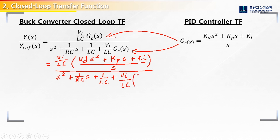And now we substitute in our PID controller equation: KD s squared plus KP s plus KI.